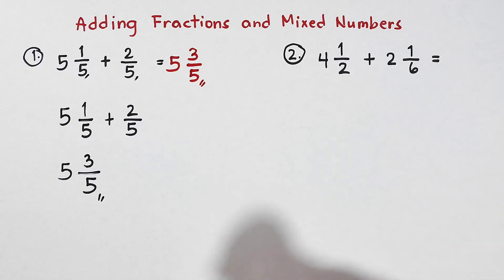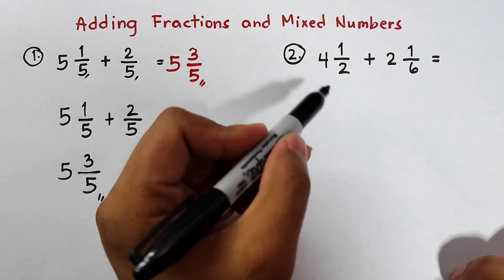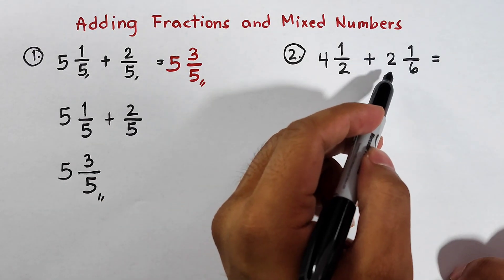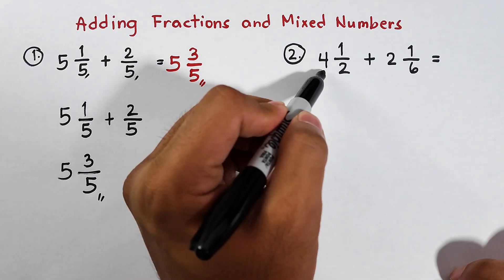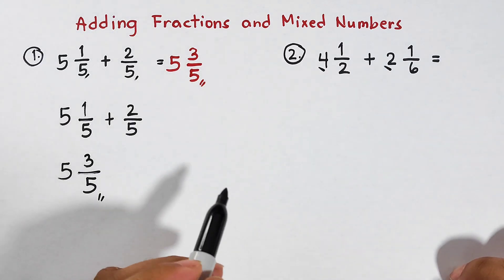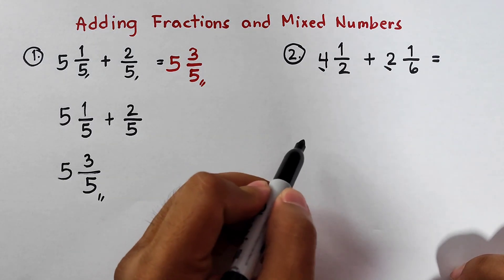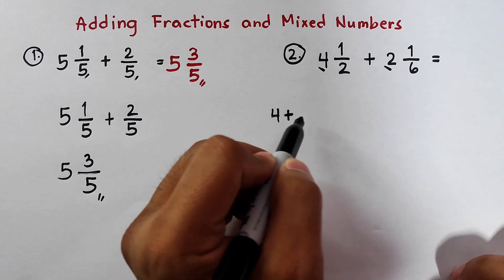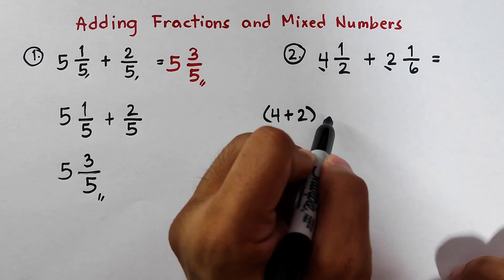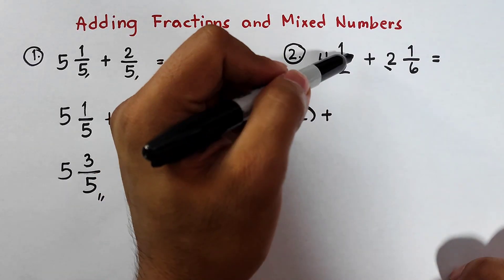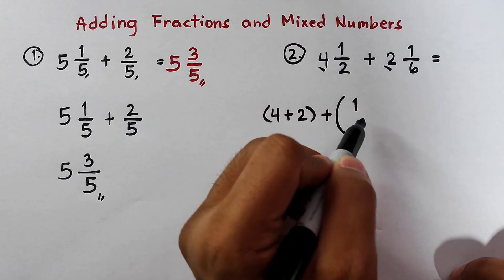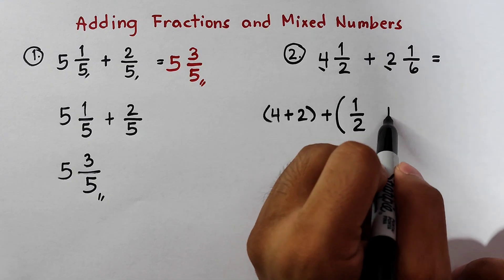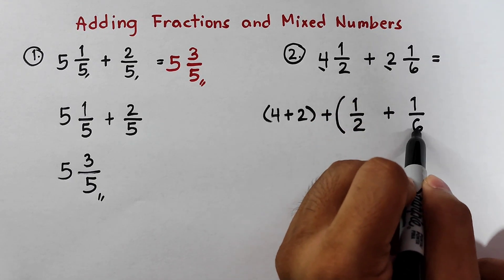That's it, guys. Now let's move on with item number 2. For number 2, we are given 2 mixed numbers: 4 and 1 half plus 2 and 1 over 6. The first thing we need to do is regrouping — we will add the whole numbers separately. Then let's add the 2 fractions separately: 1 half plus 1 over 6.